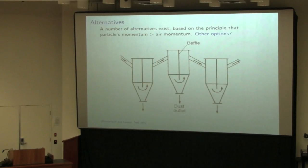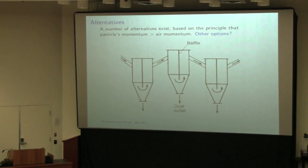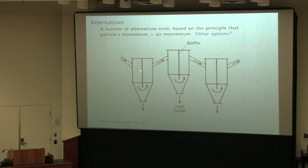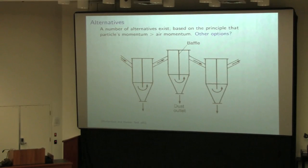When it comes to dust removal, there are many other ways of doing it — cyclones aren't the only possibility. One option plays on the fact that a particle has greater momentum than the air itself. An air stream with dust coming in — the particle has greater momentum and will preferentially go downward while the air stream turns around and goes back up. It just relies on moving the air stream around and forcing the dust out due to its higher momentum.